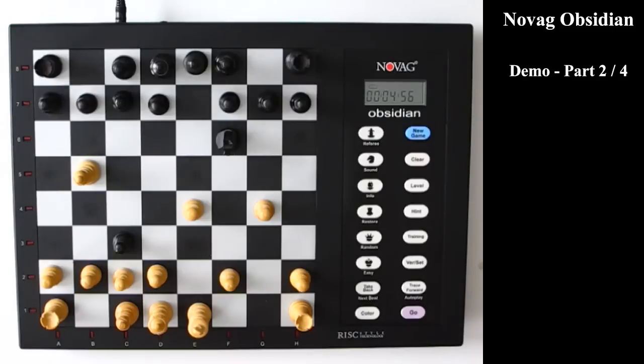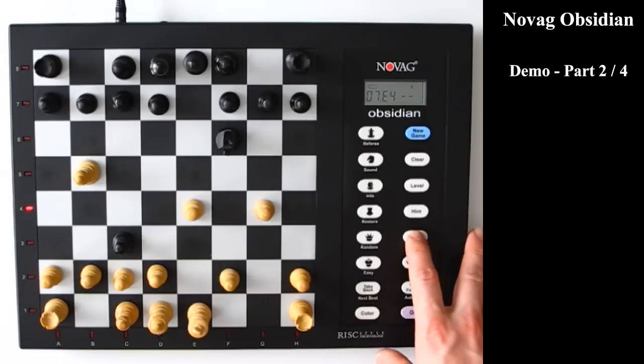It's just an advanced hint key, so to say. So when you press it once, it will highlight a piece that you could make a move with. Then if you press go and training again, it will show you where to move that piece. But you can also press the training key again.